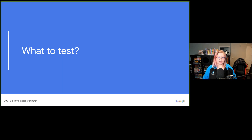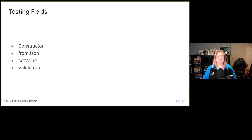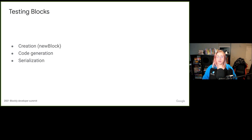What to test? For any block or field, there are a few common things that you should test. For fields, you should test the constructor, the deserialization of the field through the fromJSON method, set value, and the validators. For blocks, you should test creation, code generation, and serialization.